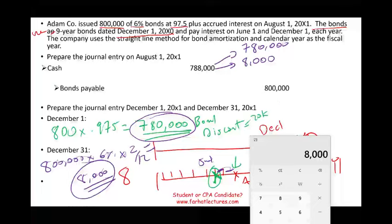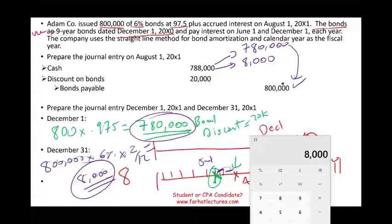The journal entry on August 1st: Cash is debited for $788,000. Bonds payable is always credited for the face value of $800,000. We record the discount of $20,000 as a debit. And we credit interest expense for $8,000, because we are holding the bond and are not going to charge ourselves for that accrued period — so we credit interest expense. This is the entry that takes place on August 1st.